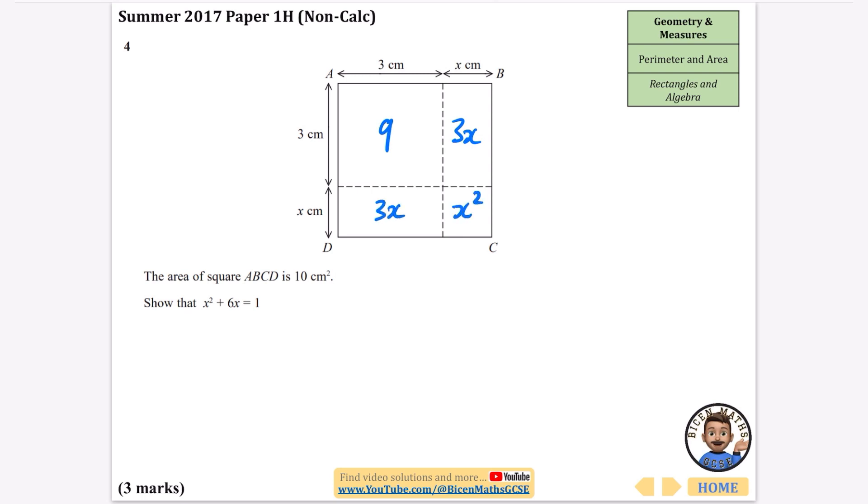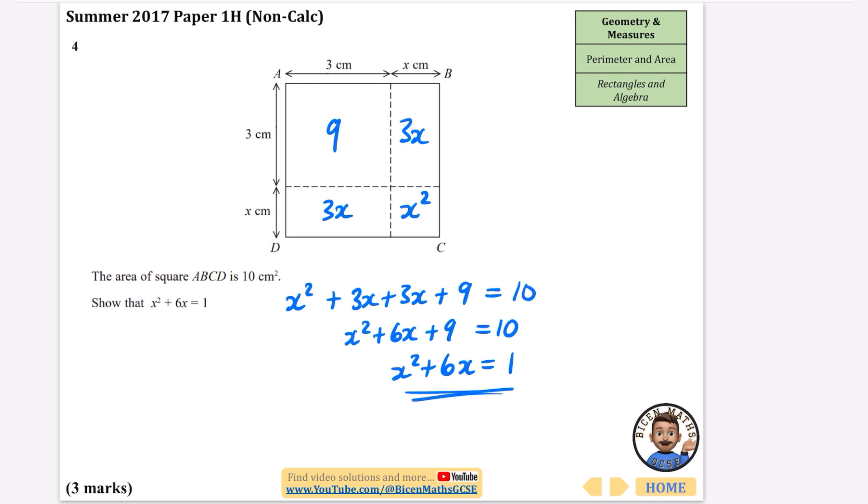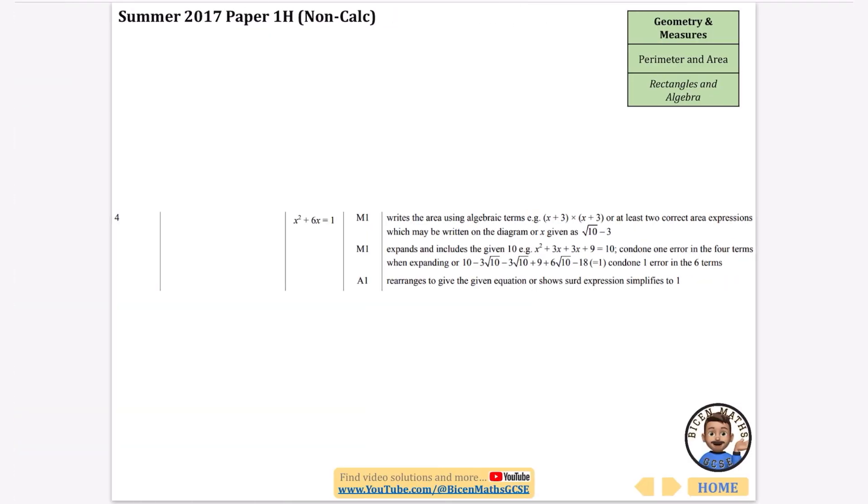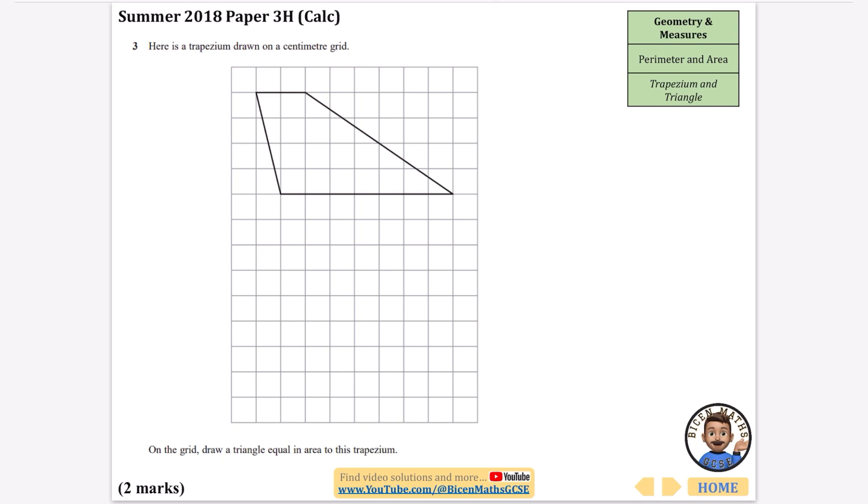This section is x times 3 which is 3x, and the last part is x times x which is x squared. So x squared plus 3x plus 3x plus 9 equals 10. We get x squared plus 6x plus 9 equals 10. To make it look like the target, subtract 9, so x squared plus 6x equals 1.